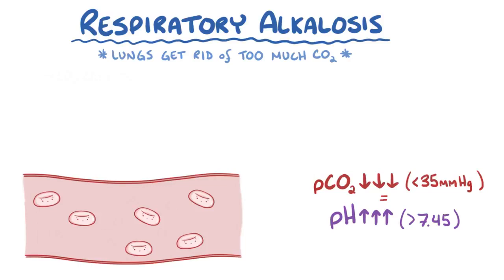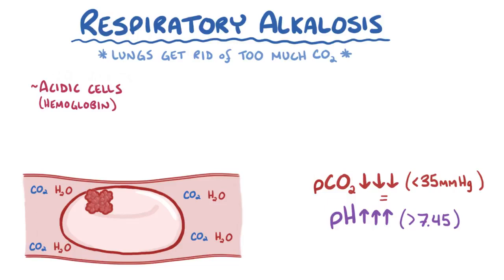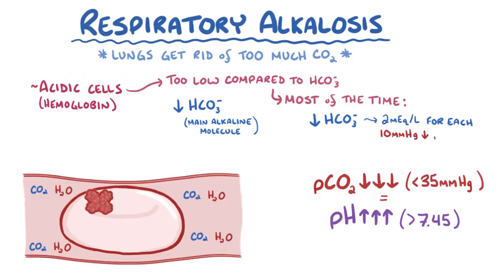To compensate for this increase, the body has several mechanisms. First, minutes after the onset of respiratory alkalosis, acidic molecules from within the cells — especially red blood cells — like exposed carboxyl groups from proteins like hemoglobin, give off hydrogen ions. These hydrogen ions diffuse into the blood, where they grab bicarbonate ions to form carbonic acid, which eventually breaks down to carbon dioxide and water. This leads to a slight decrease in plasma bicarbonate concentration, the main alkaline molecule in the blood. However, the concentration of these intracellular proteins is too low, so only a limited amount of hydrogen ions are available to neutralize bicarbonate, meaning the decrease in free bicarbonate ions is too little to have a substantial effect on pH — only about 2 mEq/L for each 10 mmHg decrease in pCO2.